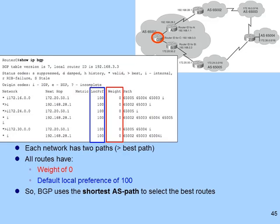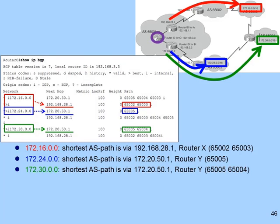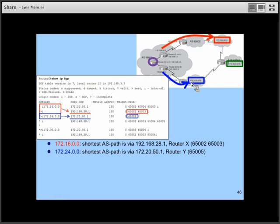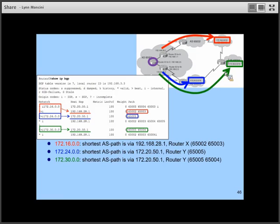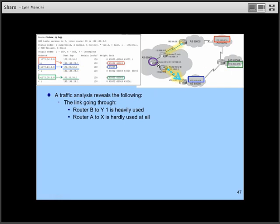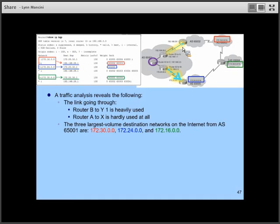In each case we have equal weights of zero and the default local preference of 100, so the tiebreaker is path length — shortest path is better. Looking at communication among three highlighted networks: to get to 172.16.0.0 we go through X, 172.24.0.0 through Y, and 172.30.0.0 through Y. But after traffic analysis, we find the link from B to Y is very heavily used while the link from A to X is underutilized. Thirty percent of internet traffic goes to 172.24.0.0 via Y, 20% to 172.30.0.0 via Y, and 10% to 172.16.0.0 via Y — meaning 50% of traffic goes through Y and only 10% through X.